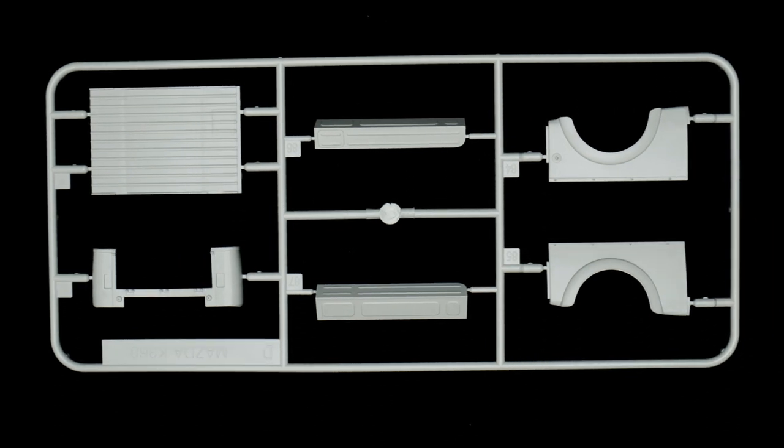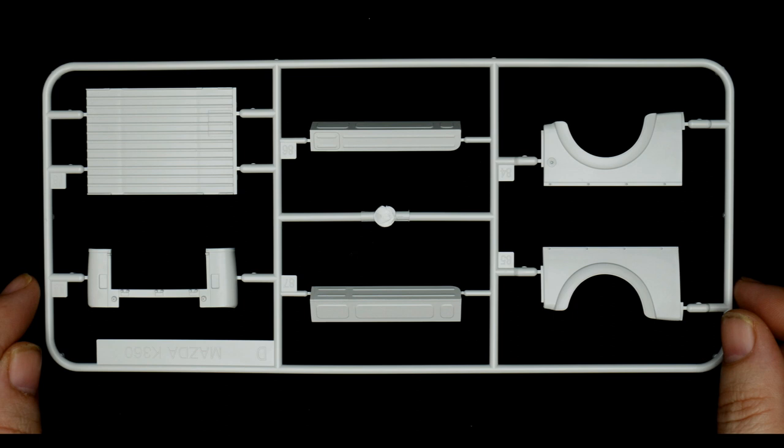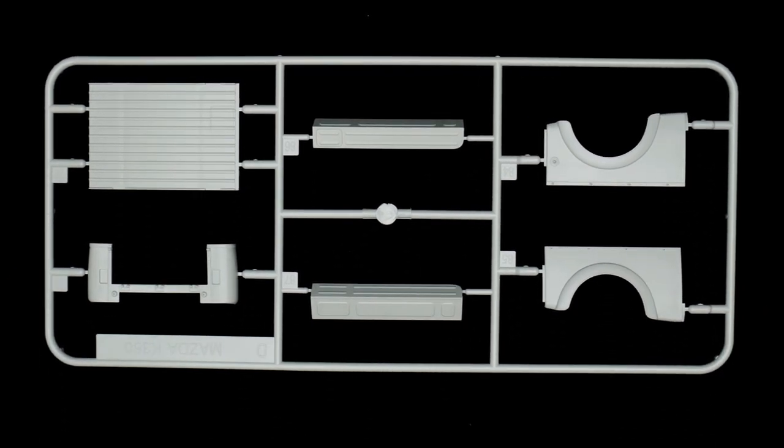And moving on to the next parts tree will be the bed parts tree. So basically six pieces there. Well, I guess seven if you count the tailgate.